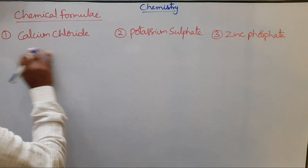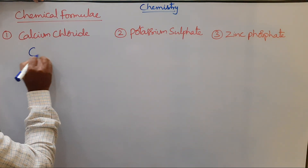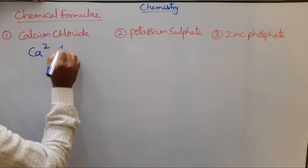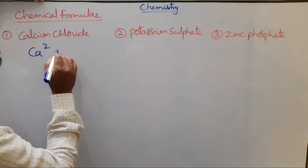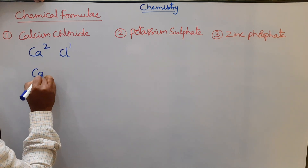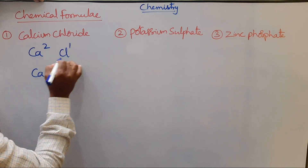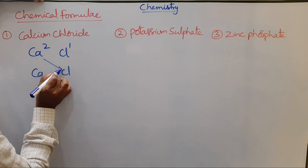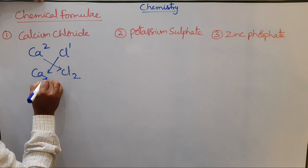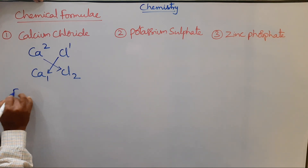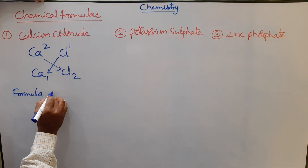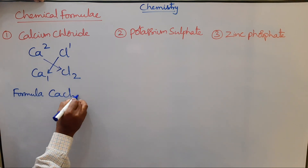Example: calcium chloride. The cation is calcium with charge 2, and the anion is chloride ion Cl⁻ with charge 1. Write CaCl, then criss-cross: calcium's valency of 2 transfers to chlorine, and chlorine's valency of 1 transfers to calcium. Therefore, the formula for calcium chloride is CaCl₂.